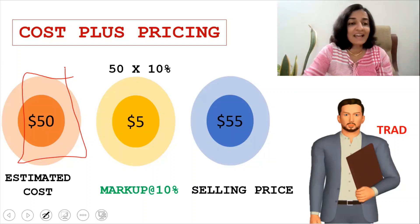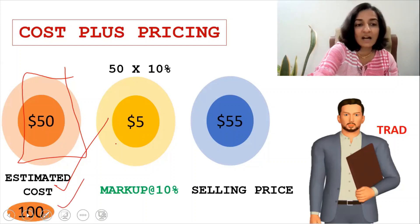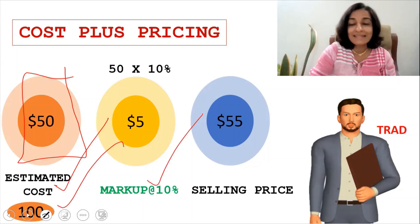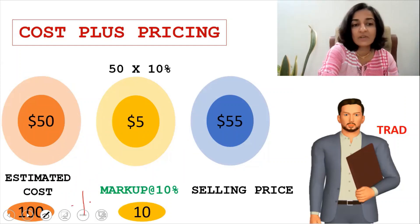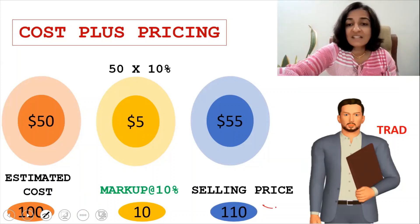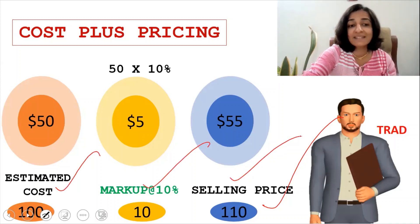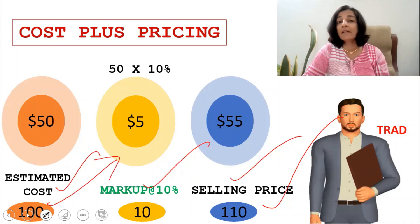If we were to generalize the calculation, if Trad's product is priced at $100, then the markup is 10% of 100, which means the markup will be $10 and the selling price will be 100 plus 10, or $110. So this is the generalized relationship between the cost, the markup and the selling price.